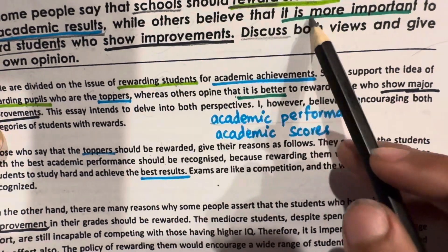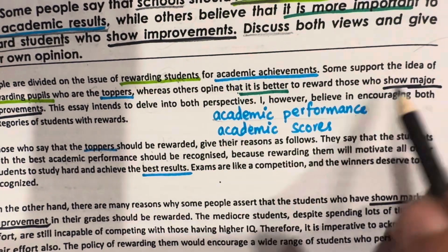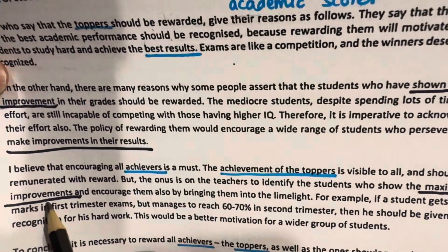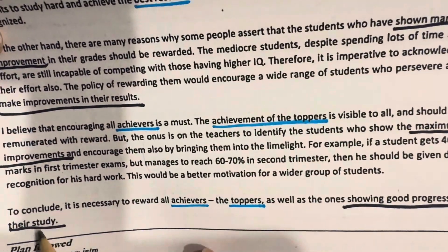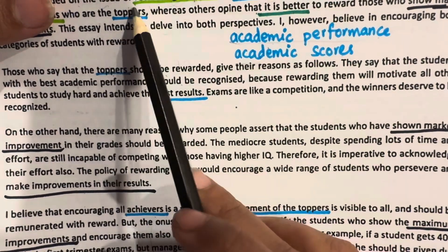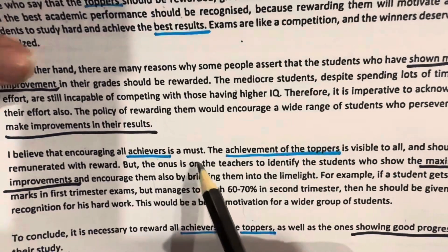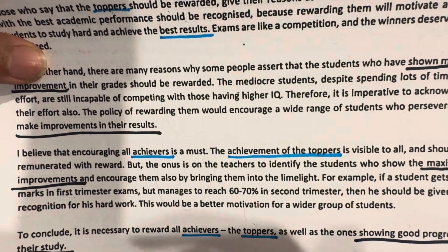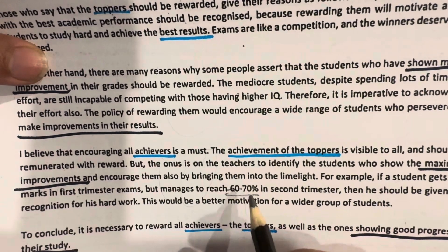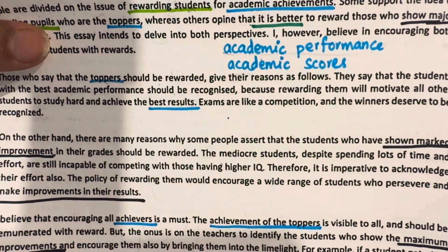In the essay prompt it says 'it is more important,' and in our introduction we are writing 'it is better.' You can write 'show major improvements,' 'show marked improvements,' 'make improvements in their results,' 'maximum improvements,' and 'showing good progress in their study.' Just read this essay and using these words, write in your own words. You don't have to discuss both sides here — you have to give your own opinion. You can give an example from personal experience or your country. Also prepare this topic for the speaking section. That's all for this video; if you have any questions, you can ask in the comments.